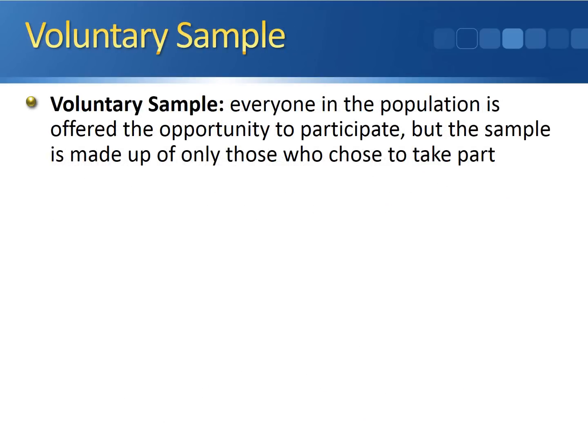The final type of sampling method that we have is a voluntary sample. A voluntary sample is a sample where everyone in the population is offered the opportunity to participate, but the sample is made up of only those people who choose to take part.